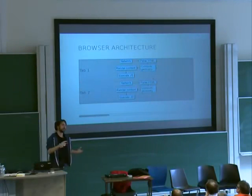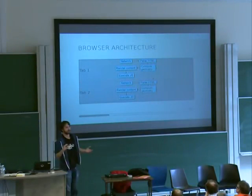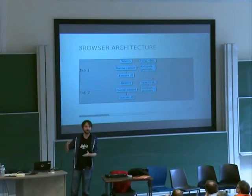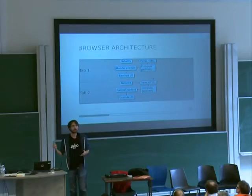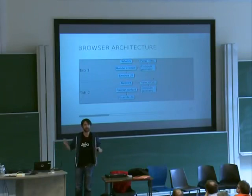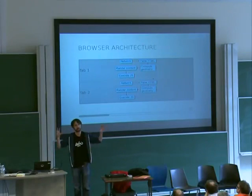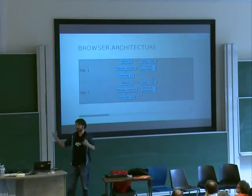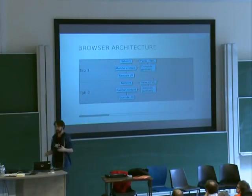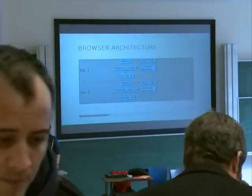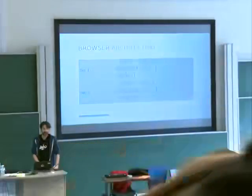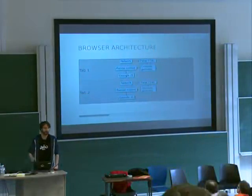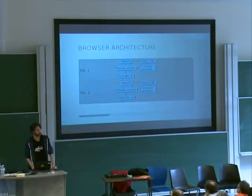Engines like Blink have a different process per tab, which is one way of exploiting parallelism because tabs can operate independently. But even still, you have serial lines of execution within each tab, and this is somewhere where we believe Servo can improve on the state of the art.